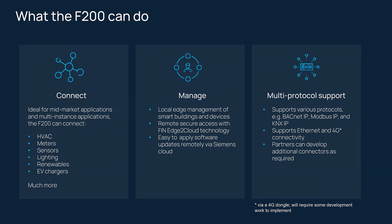The F200 is suited for those mid-market and multi-instance applications. It can connect to not just HVAC, but meters, sensors, lighting, renewables, EV chargers, and more. We've had a lot of success in multiple markets — our core was HVAC, but we've moved into refrigeration, lighting, shading, occupancy control, and more. It allows for local edge management of smart buildings and devices using edge-to-cloud remote access. It's extremely secure and it's really easy to apply software updates using the Siemens cloud called Horizon.